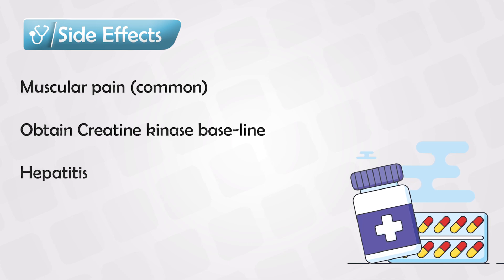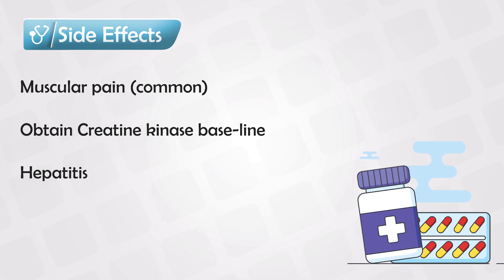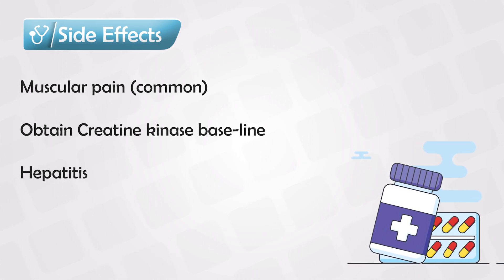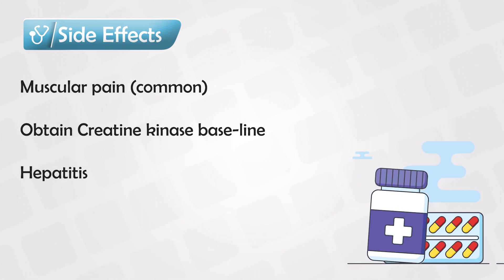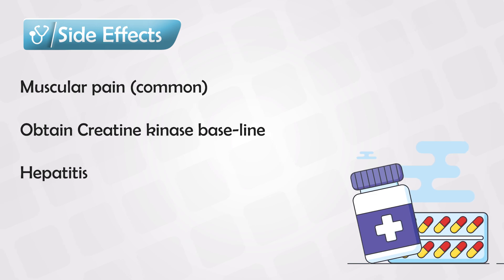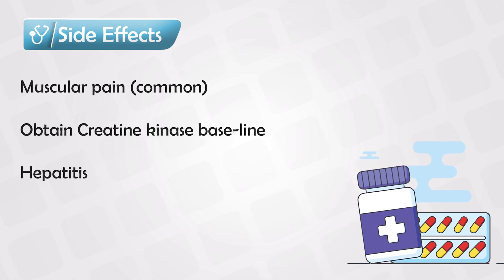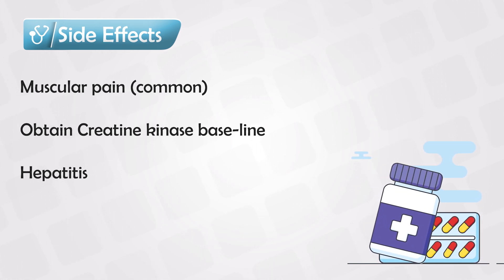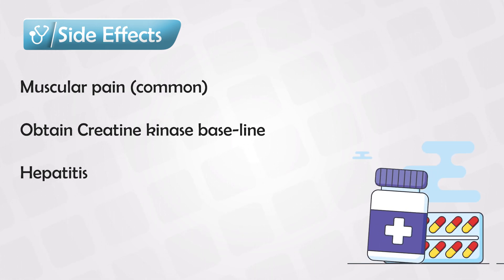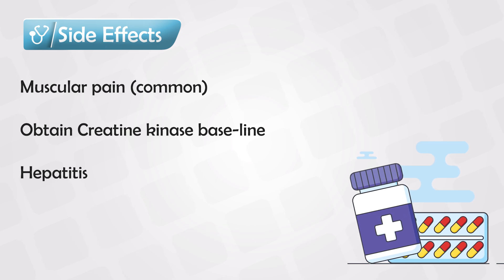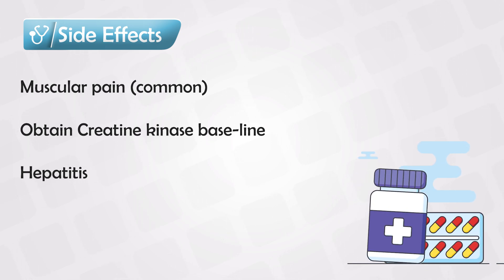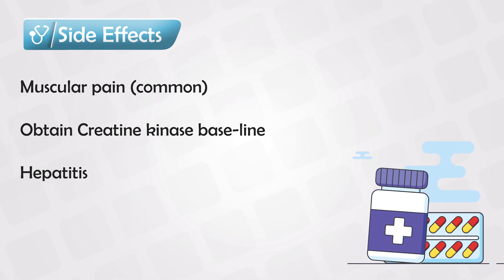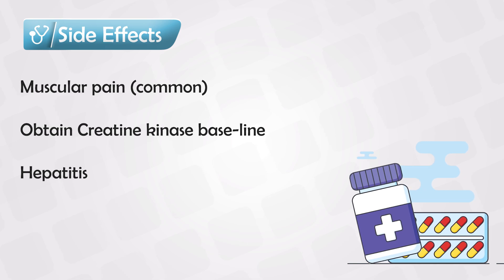A rare complication is hepatitis, which is inflammation of the liver. This can lead to right upper quadrant pain, or upper right abdominal pain, with symptoms of jaundice. The patient will look yellowish and they will have itching all over.